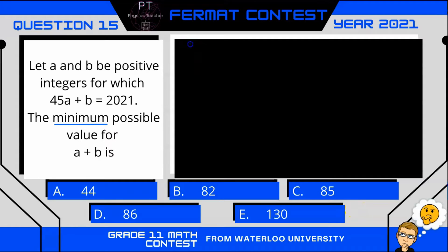Okay, so our problem says 45a + b = 2021. I'm going to rewrite this as 44a, and I have one more a, so plus a + b. Let me put brackets around here so you can see where I'm going with this, equals 2021.